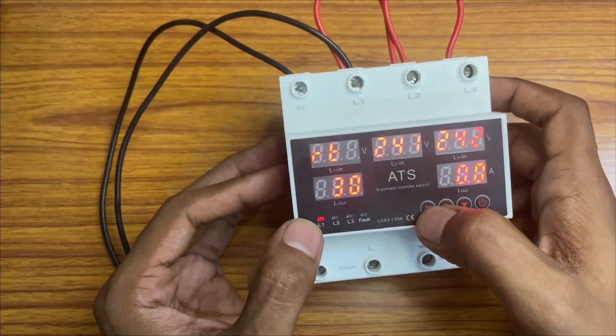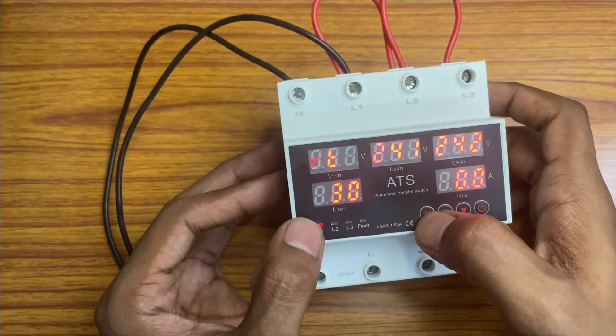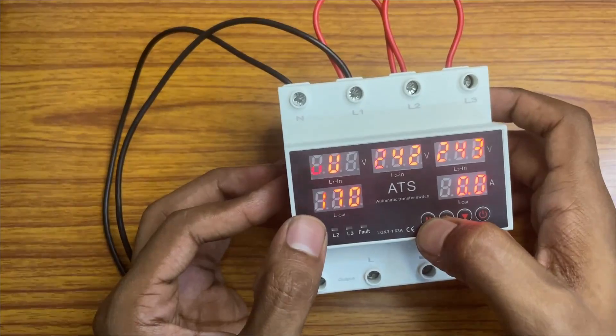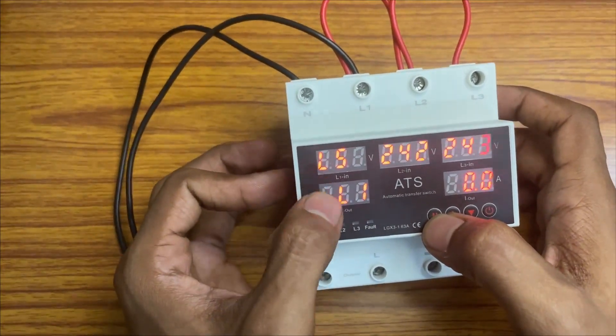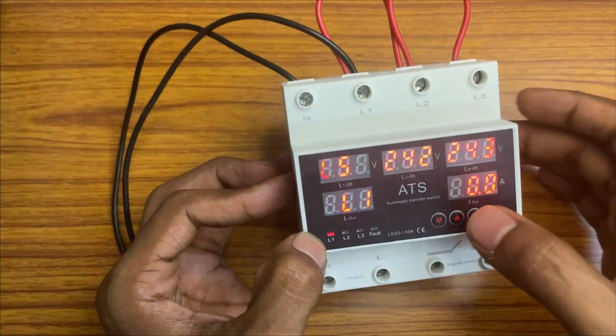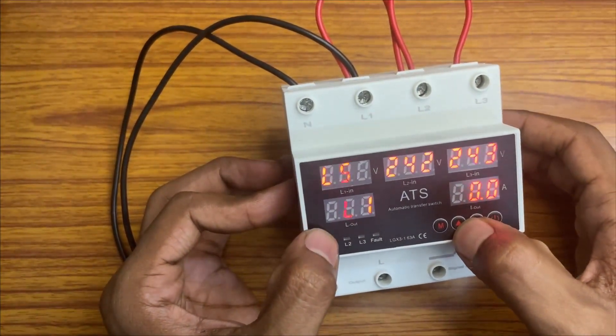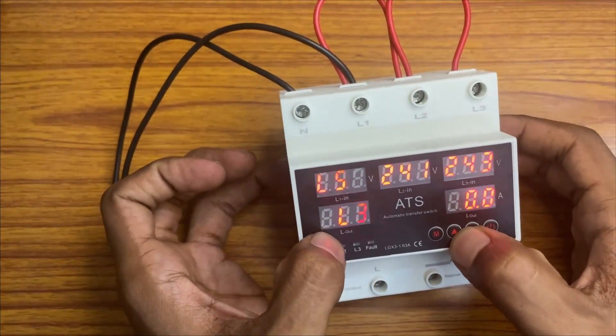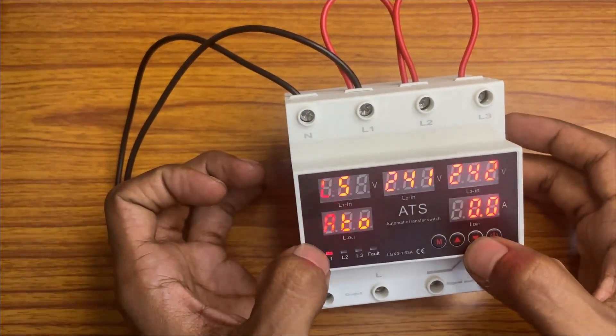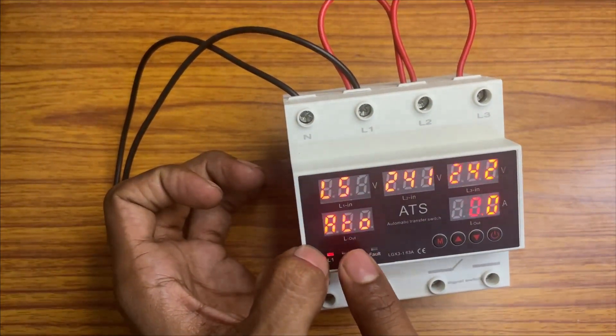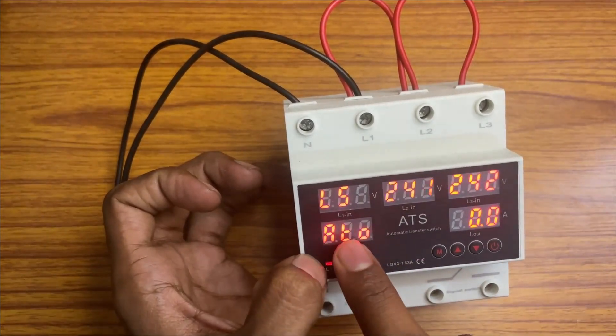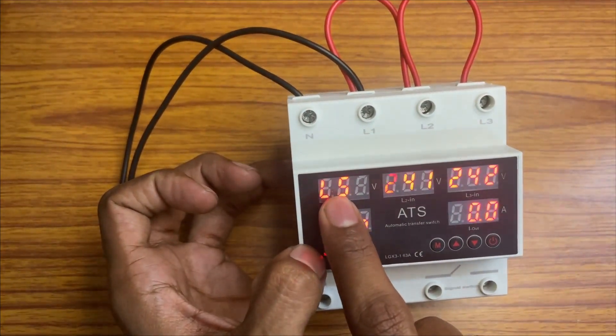This is power delay time, this is reset delay time, over voltage under voltage settings. This is L1 line priority, this is L2 priority, this is L3 priority.